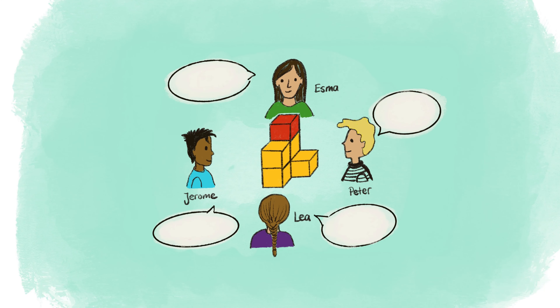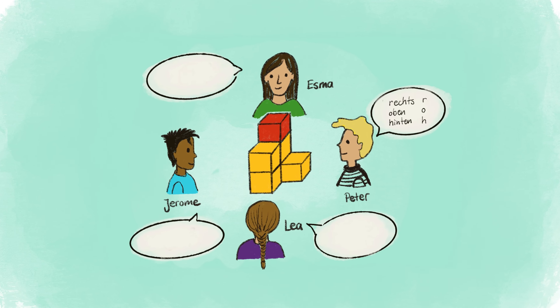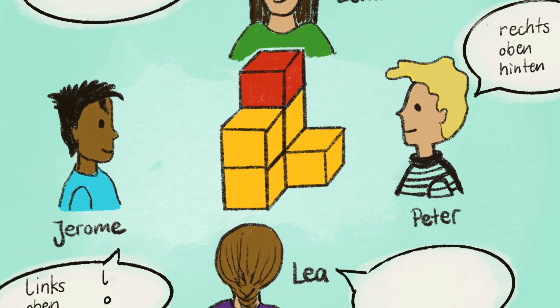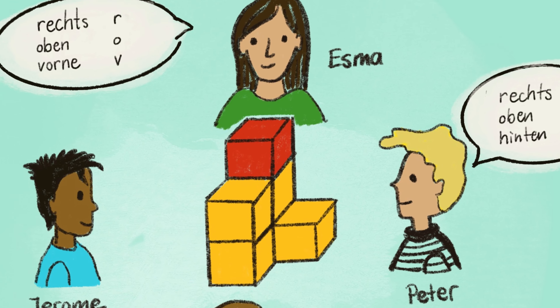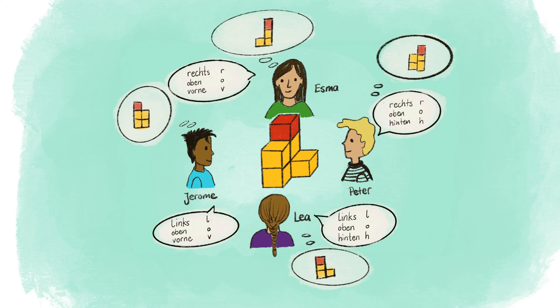Zum anderen eignet es sich zur gegenseitigen Kontrolle und Verständnisüberprüfung. Wenn einer in der Gruppe nicht verstanden hat, was zu tun ist, gibt es noch andere Kinder. Und noch viel wichtiger: da es darum geht, ein Würfelgebäude aus vier verschiedenen Ansichten zu beschreiben, kann man diese Situation tatsächlich nachspielen – das ist ein authentischer Anlass. Vier Kinder positionieren sich um einen Tisch, schauen von vier verschiedenen Seiten auf das Gebäude und tauschen sich aus. Das ist ein natürlicher Sprechanlass, um die eigene Sichtweise zu verbalisieren.